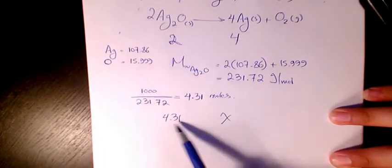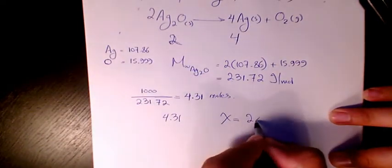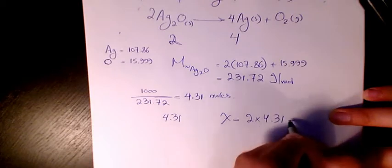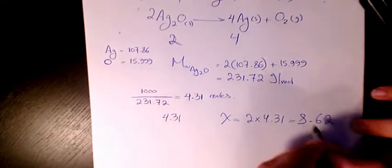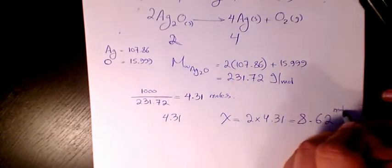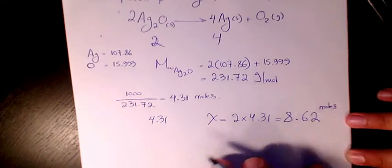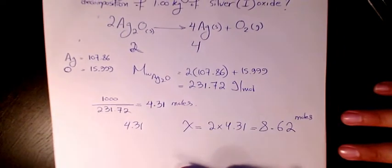So x will be 2 times 4.31, which is going to be 8.62. We can also use cross multiplication to find it. So we will produce 8.62 moles of Ag if we have 1 kilogram of silver(I) oxide.